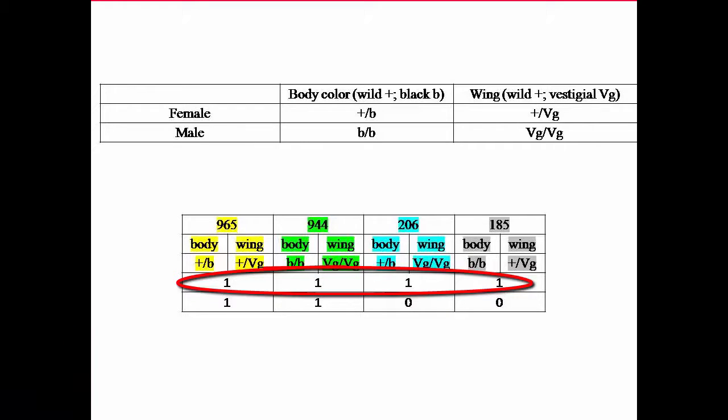So in either case, you can see Morgan's not getting the result that he expects. So he's got to explain this. Nobody understands it. You shouldn't be getting any of the wild body and vestigial wing or the black body with wild wing.